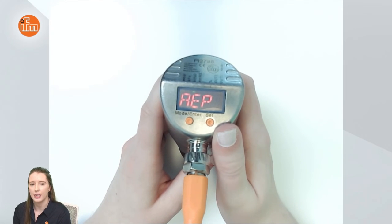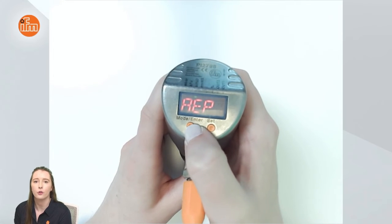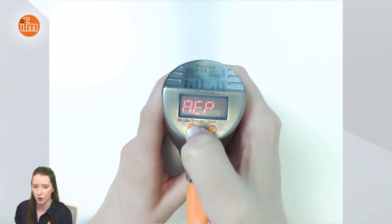So currently my 4 to 20 milliamp output would be scaled for 0 to 26 inches of water column.